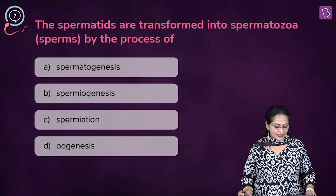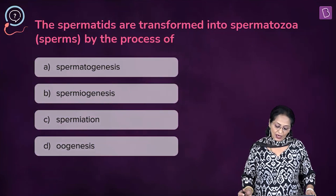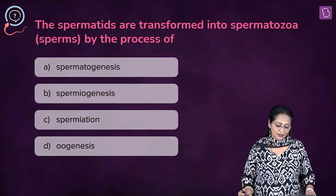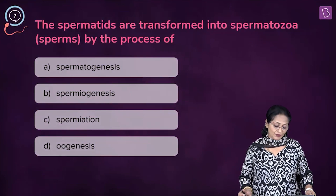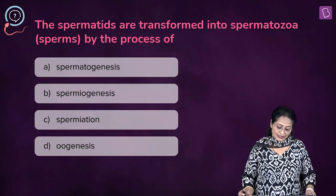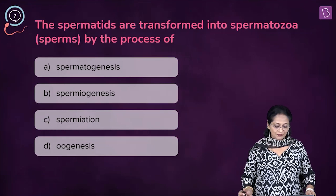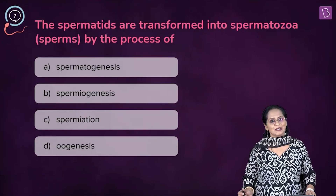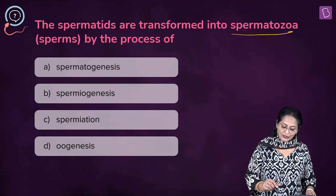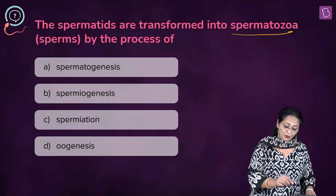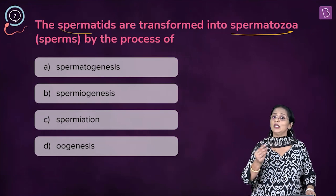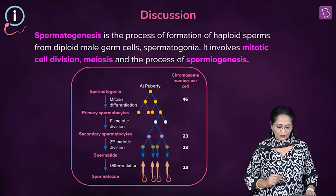Let's look at this question: spermatids are transformed into spermatozoa, that's the sperms, by the process of: A) spermatogenesis, B) spermiogenesis, C) spermiation, D) eugenesis. What do you call the transformation of spermatids into spermatozoa? That's what you need to identify.